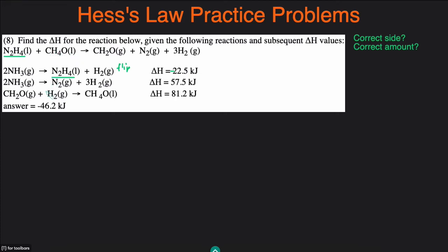We'll pick a species that only appears in one of the remaining reactions — that could be CH4O, because CH4O only appears in the third reaction. We want it on the reactant side, but it's on the product side, so I have to flip it. And I want 1, and I have 1, so I only need to flip it and change the sign. From the second reaction, we can pick N2, because N2 only appears there. We want 1 N2 on the product side, and it's already there, so we don't have to do anything. Adding all the delta H's: negative 22.5 plus 57.5 minus 81.2 gives negative 46.2 kilojoules. Which matches the answer.